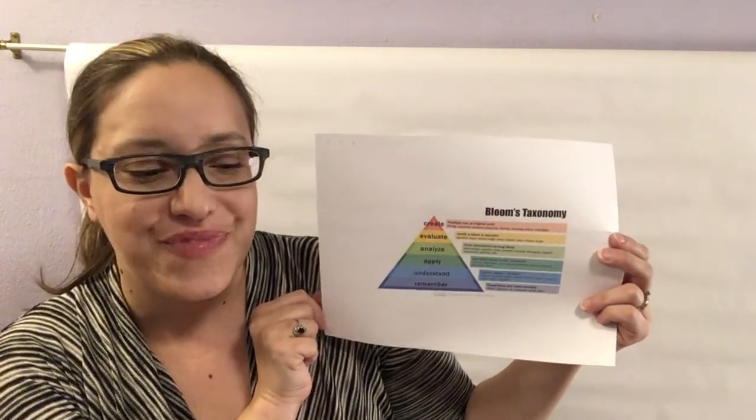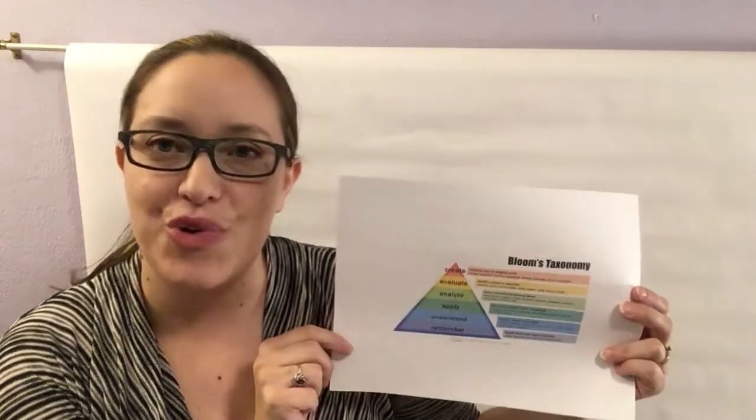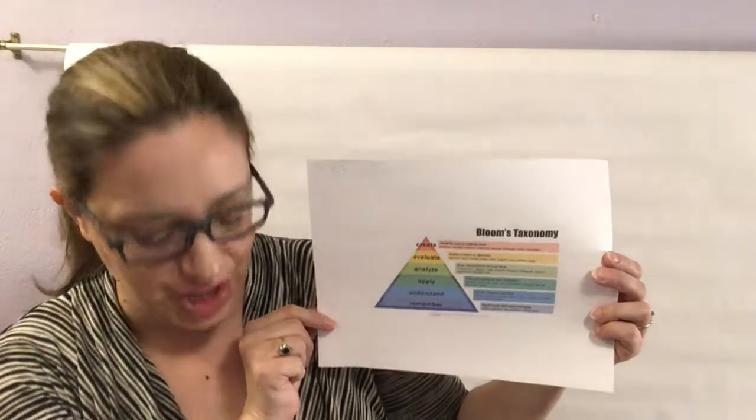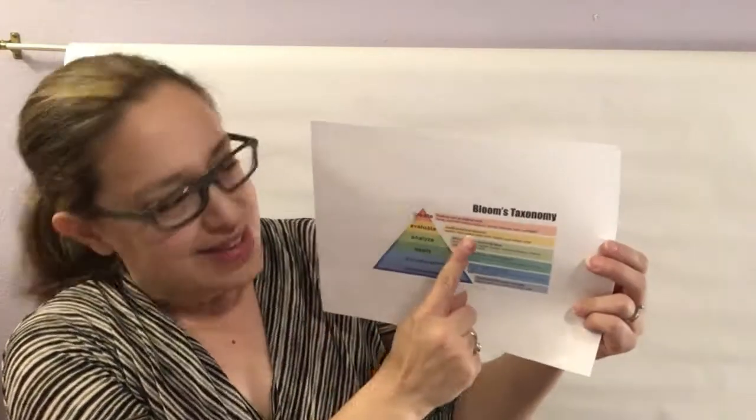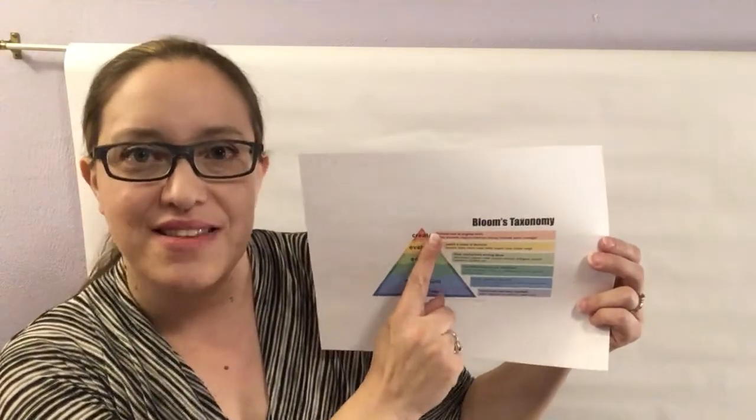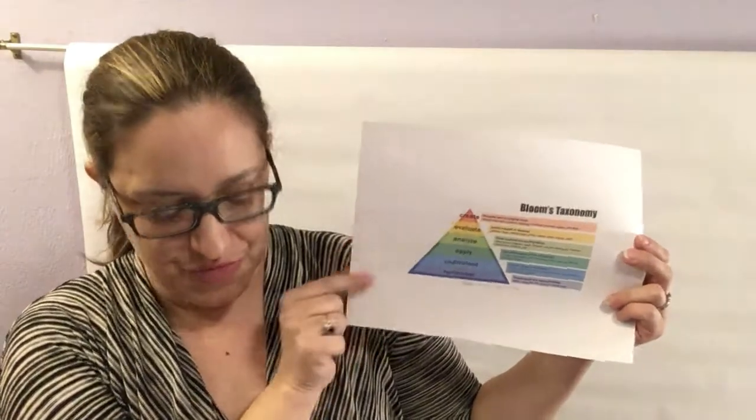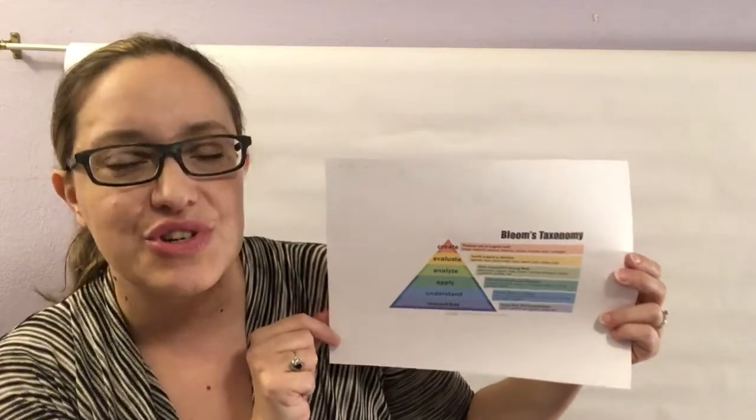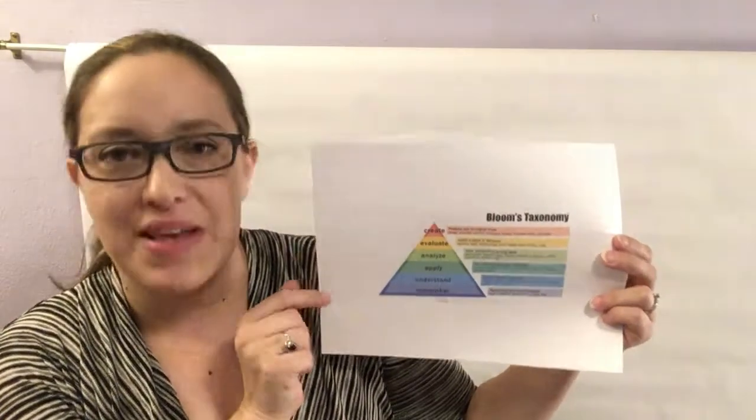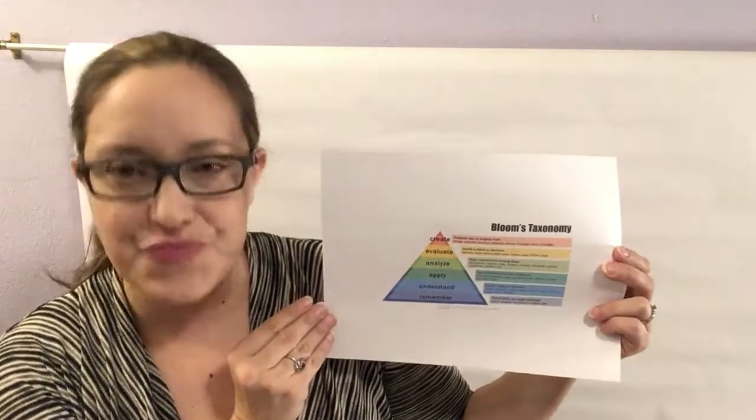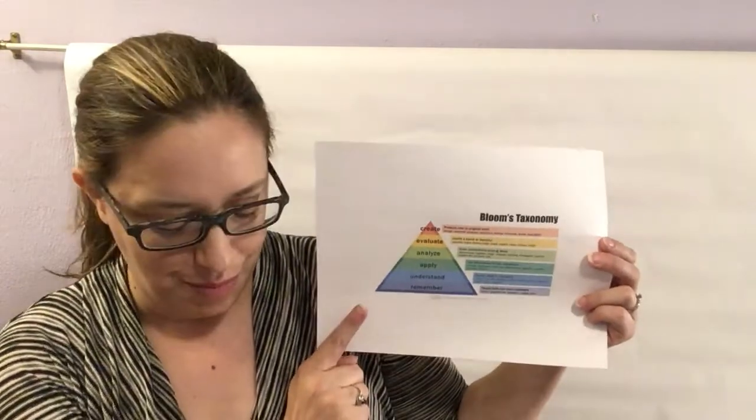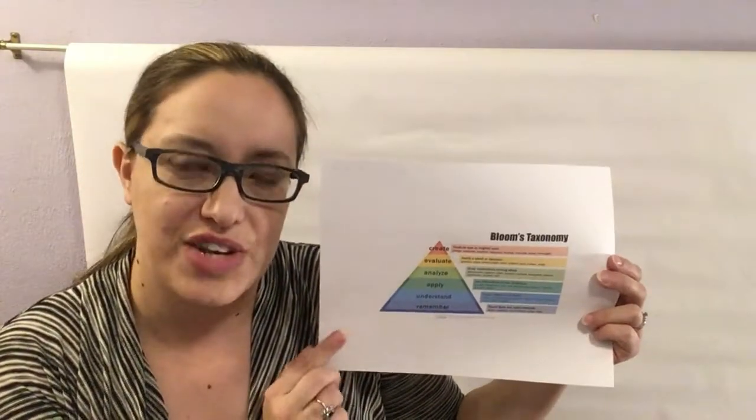The fifth learning outcome, create and self-evaluate an ASMR video, is at the evaluate and create levels. This would be assessed by having the student create a video based on everything they had learned and then complete a self-evaluation based on defined criteria.